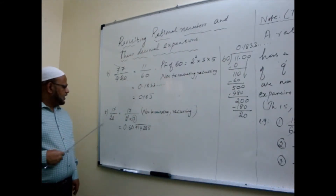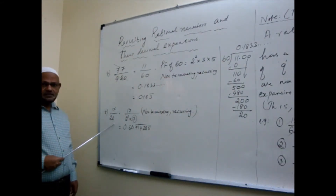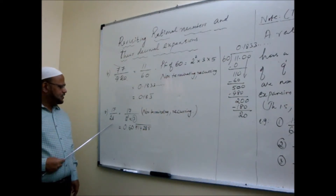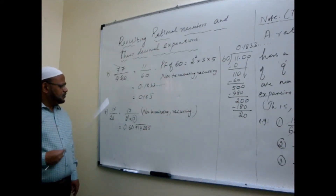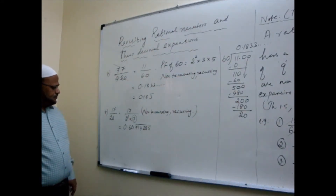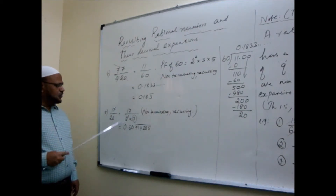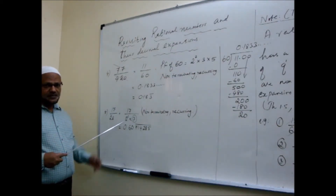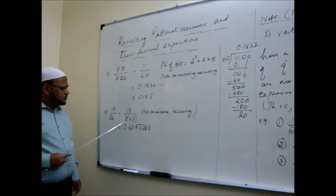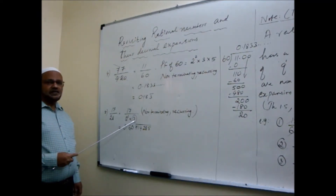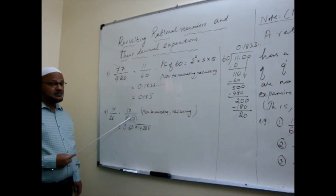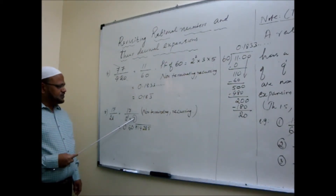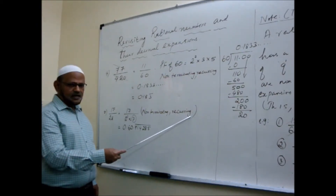Come to Example 5. 78 by 28 — make sure it is in the simplest form. There is no common divisor; 17 and 28 are co-prime. Prime factorizing 28: 2 into 2 into 7, that is 2 squared into 7. Now tell me, will it terminate or not? The 2s are okay, but because of the 7 — 7 should not be there — if 7 is there, it will not terminate. Because of the 7, it will have non-terminating recurring decimal.